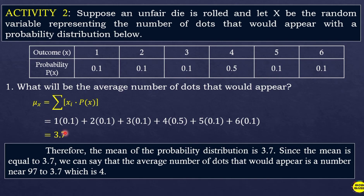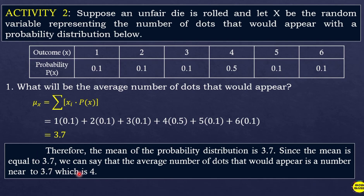Therefore, the mean of the probability distribution is 3.7. Since the mean equals 3.7, we can say that the average number of dots that would appear is a number near to 3.7, which is 4. So if we repeat the experiment over and over, there is a higher possibility that four dots will always appear, since the average number of dots that would appear is four.